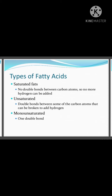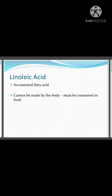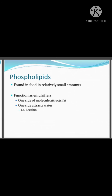Fatty acids can be saturated (single bond) or unsaturated (double bond). Unsaturated fatty acids can be monounsaturated (one double bond) or polyunsaturated (more than one double bond). Omega-3 fatty acid is an example of a polyunsaturated fatty acid, mainly found in fish oil and very beneficial for the heart. Linoleic acid is a type of essential fatty acid that cannot be synthesized by the body and must be consumed through food; it is mainly found in cooking oils.